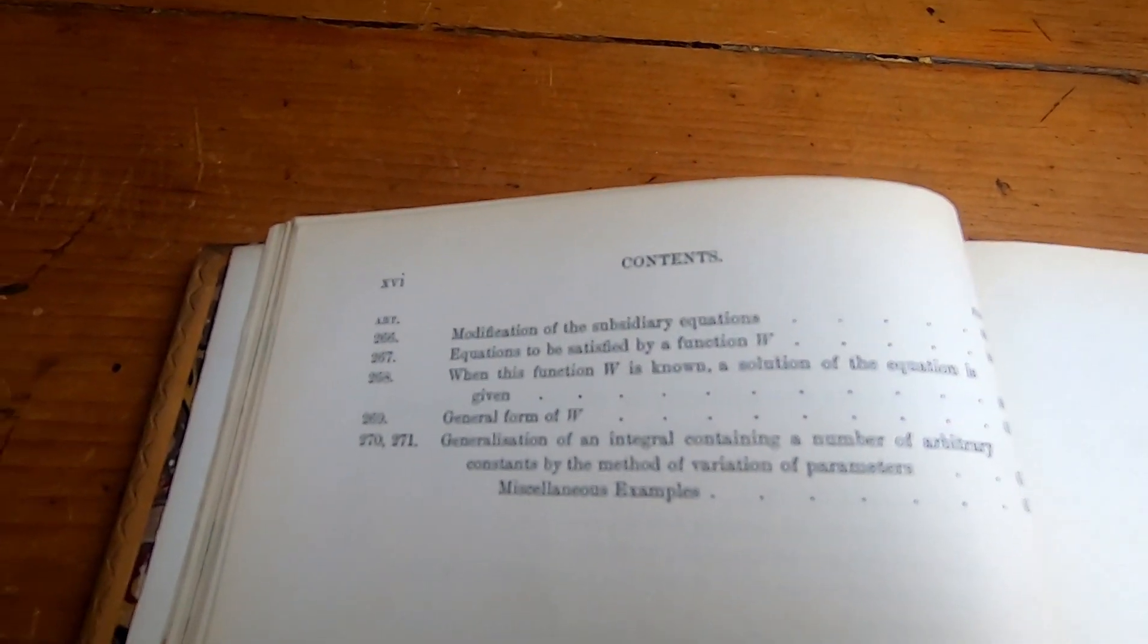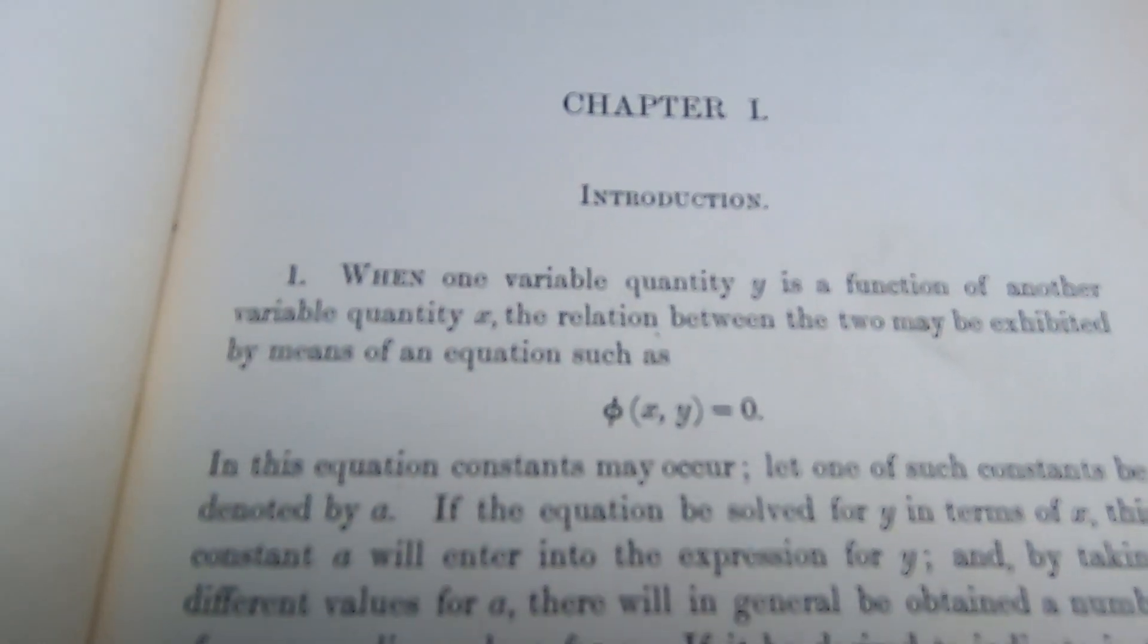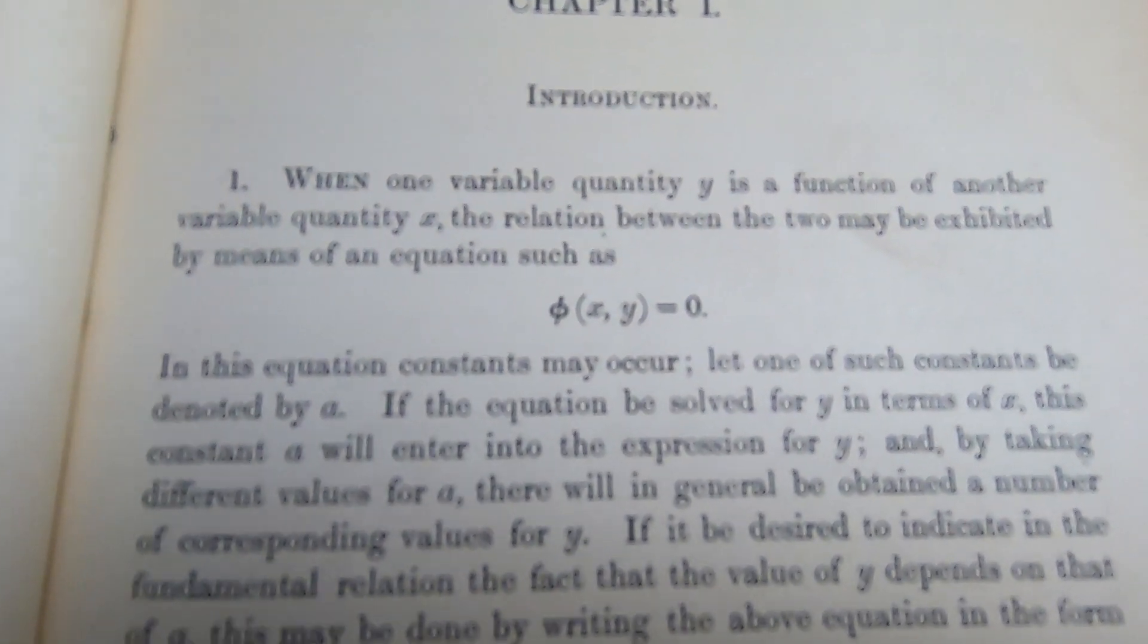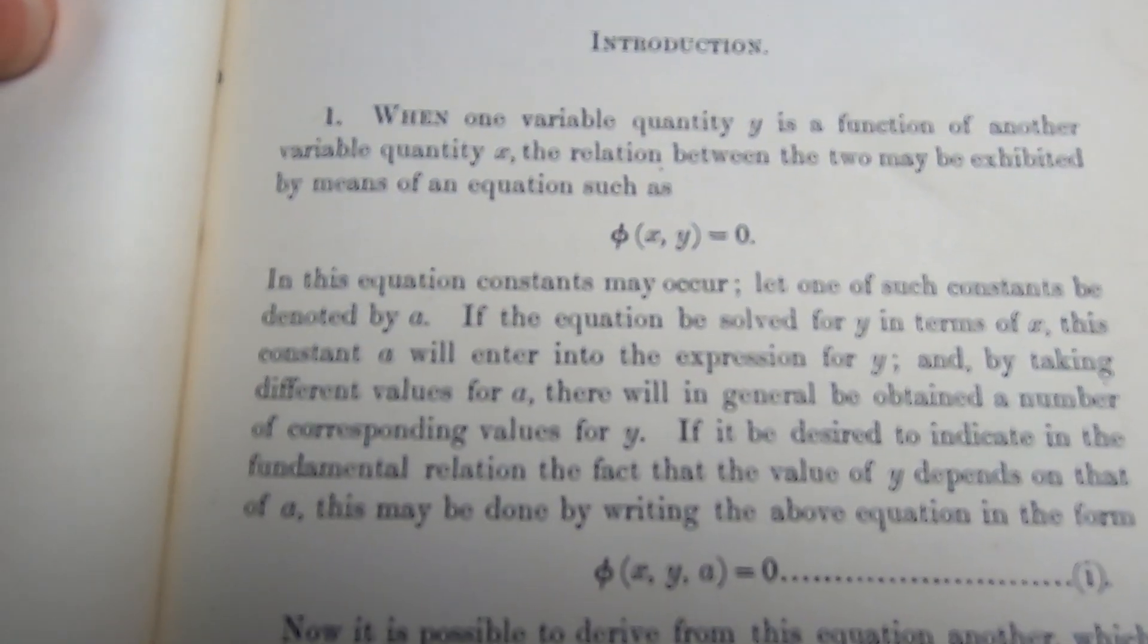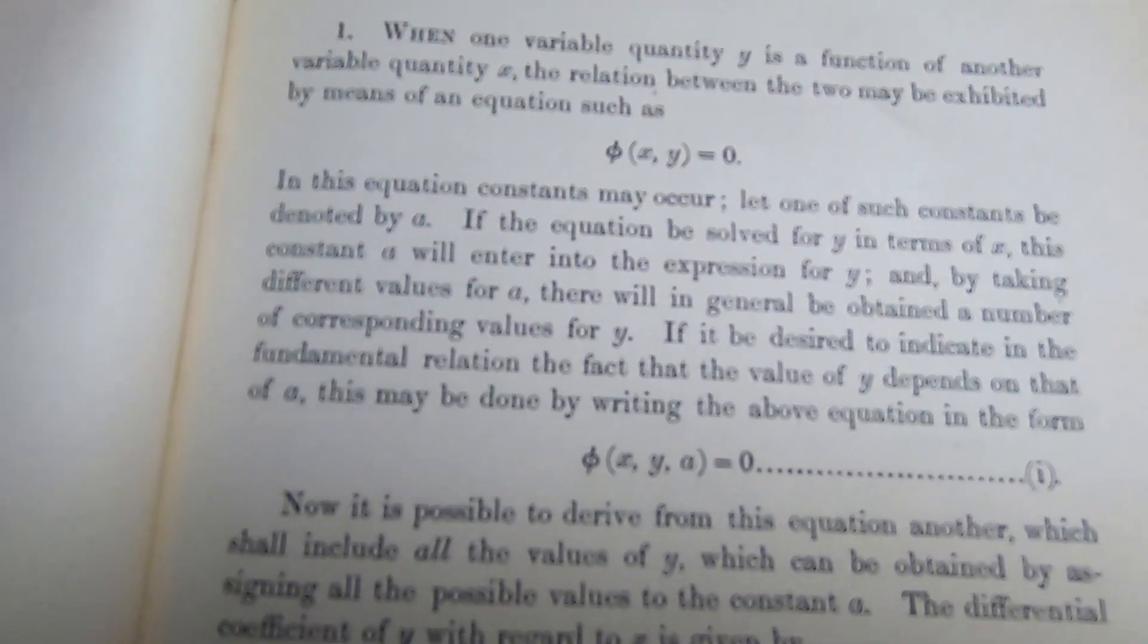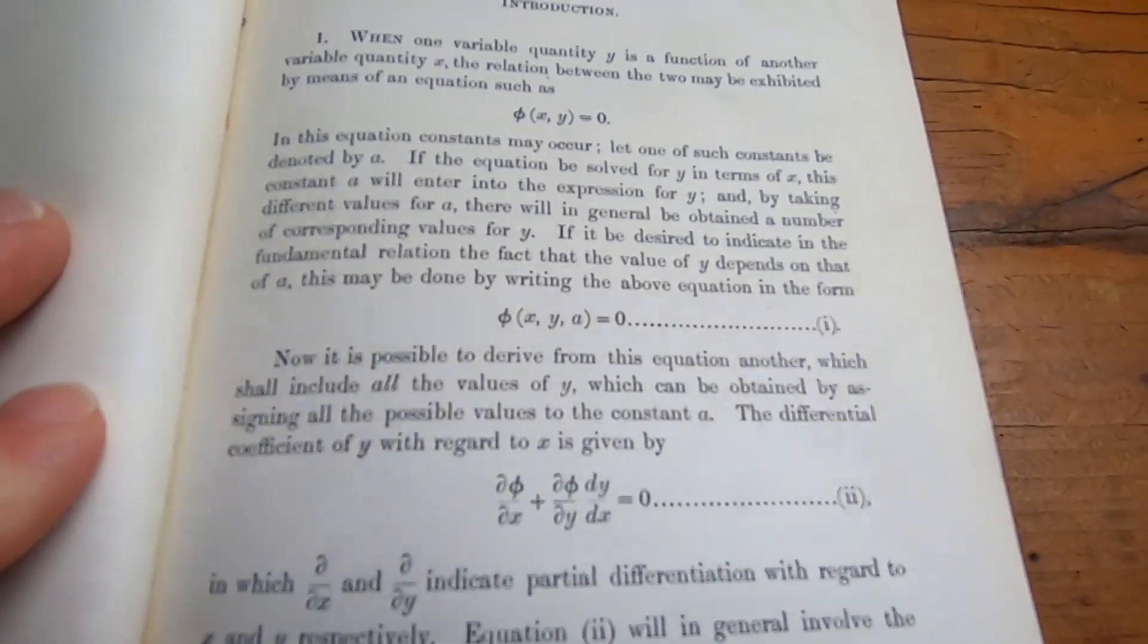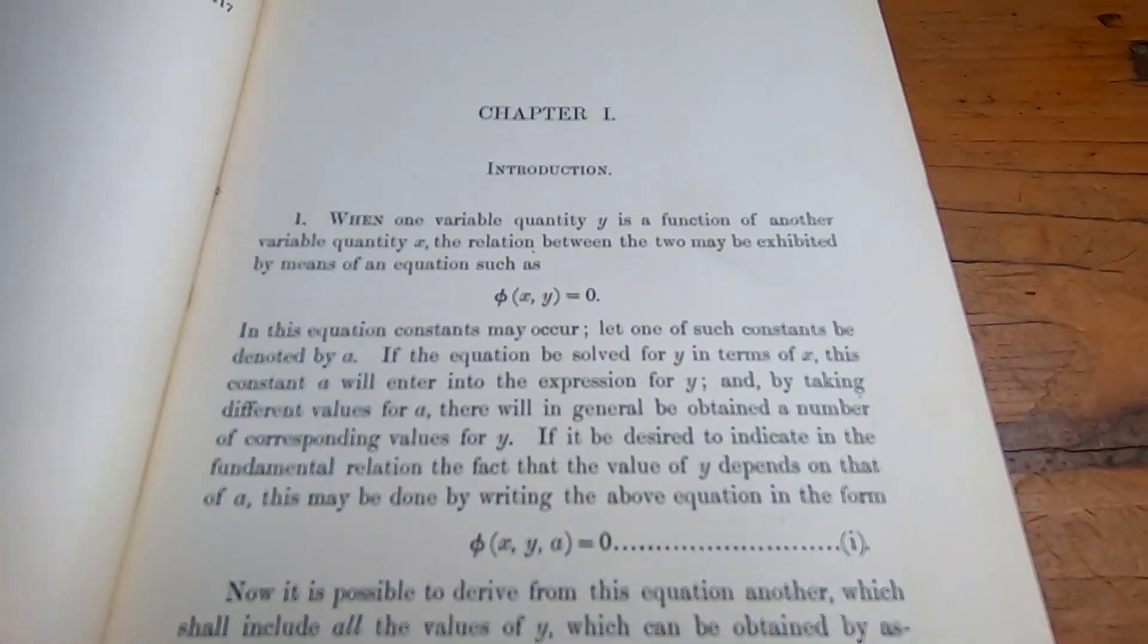So you see it. Let's take a look at the introduction. Chapter one, introduction. When one variable quantity y is a function of another variable quantity x, the relation between the two may be exhibited by means of an equation such as φ(x,y) = 0. In this equation, constants may occur. And then it goes on and on. So it's written at perhaps a higher level than a lot of the other books written today.